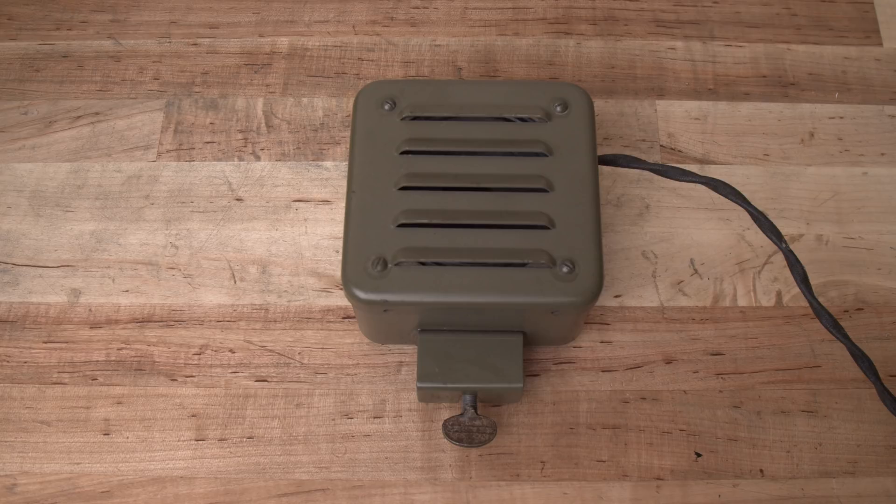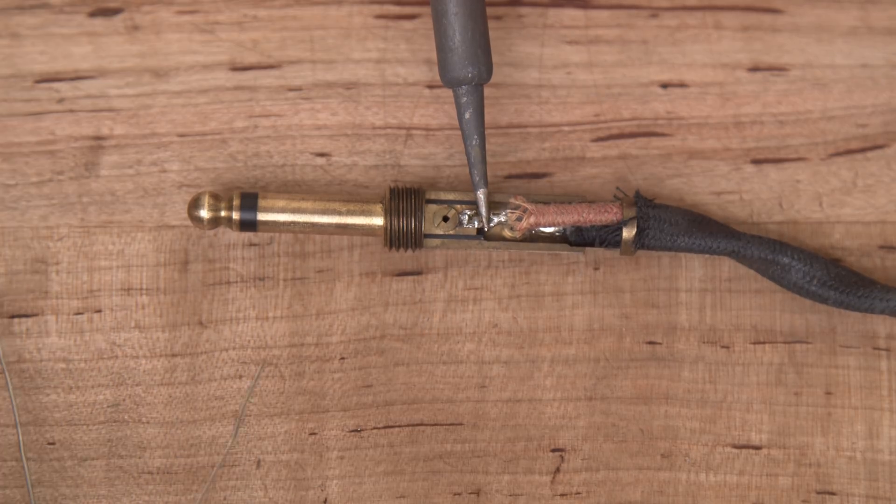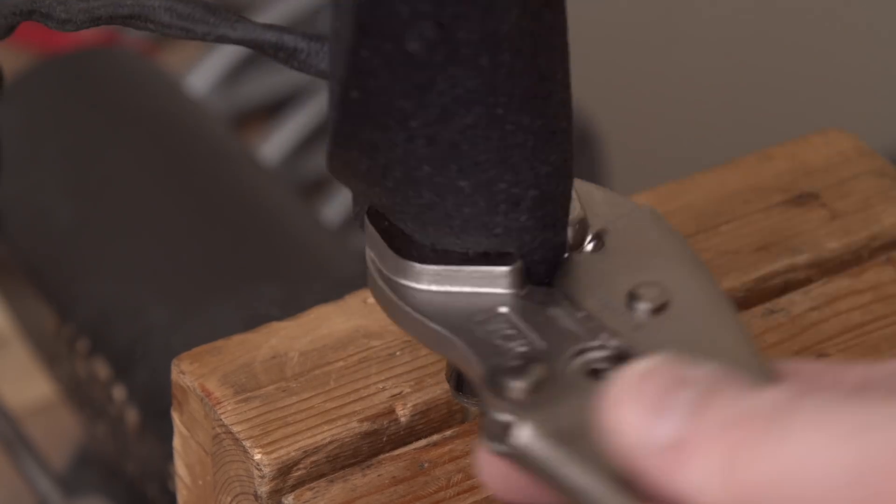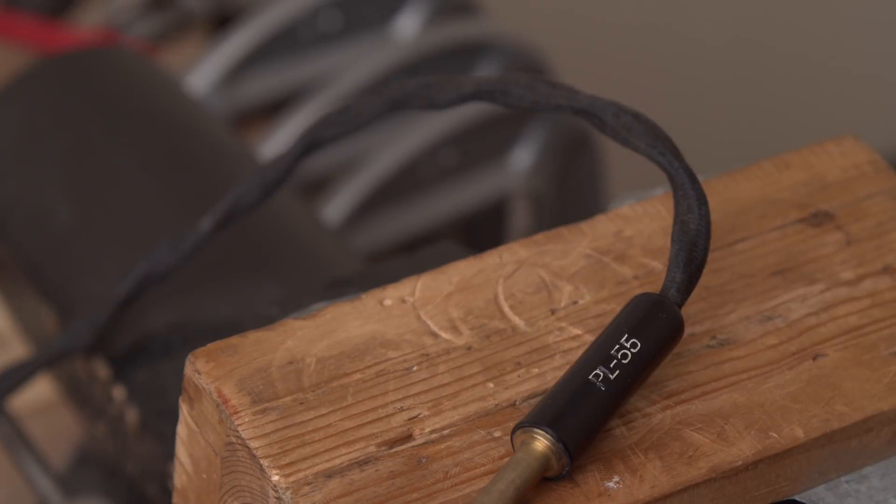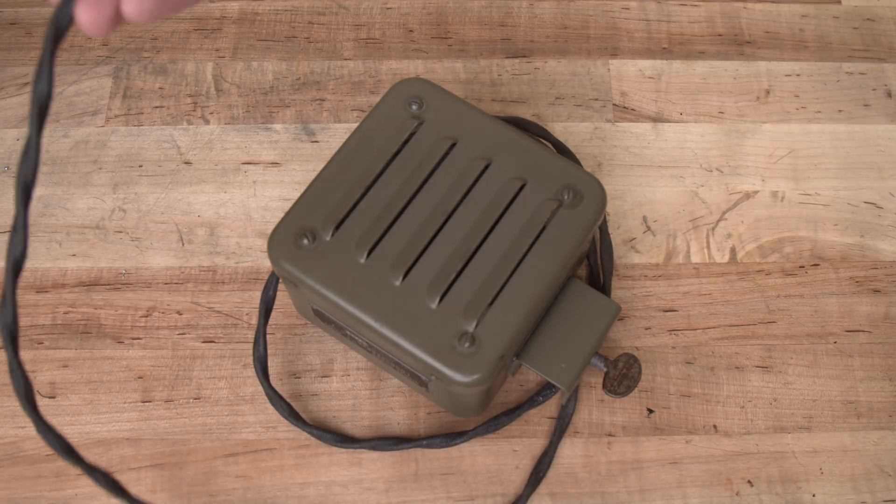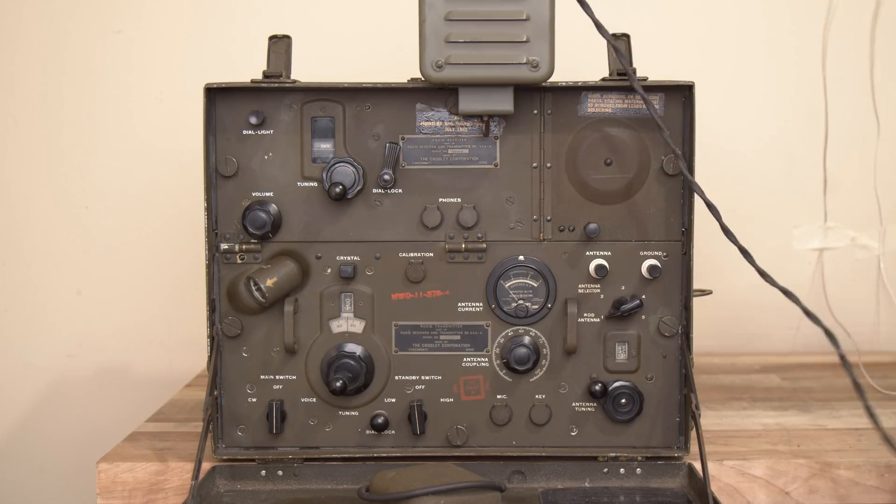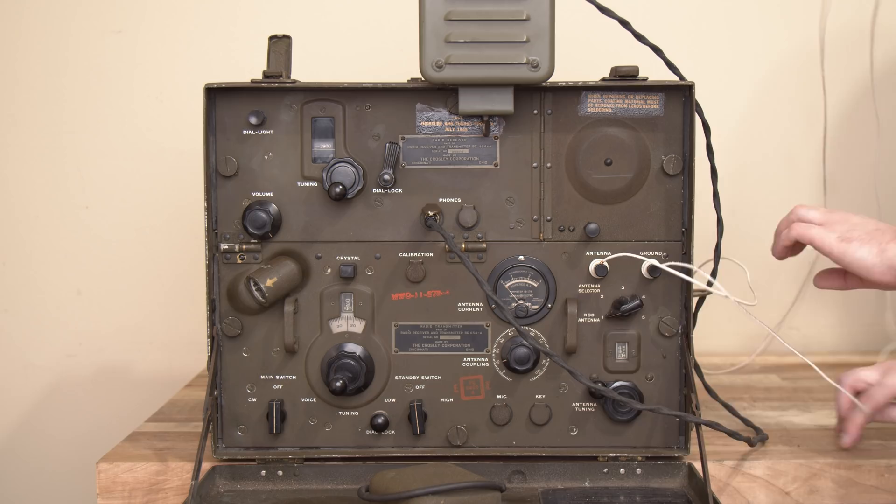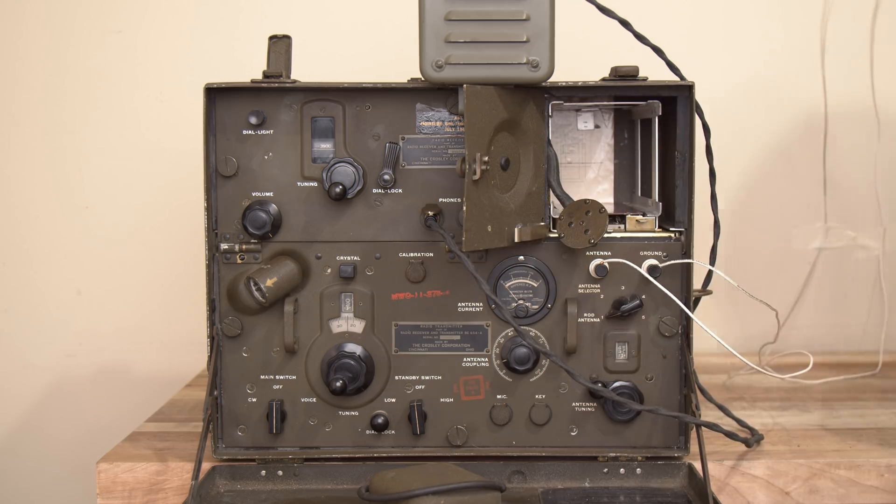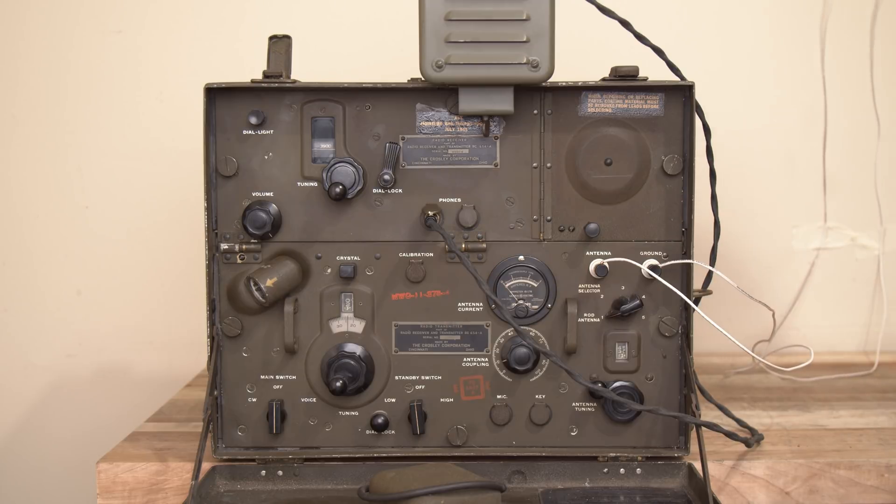After reassembly, I installed a new PL55 connector onto the speaker cable. PL55 is just another designation for the standard one-quarter inch phono plug. Now, I finally had a way to listen to the output of the receiver, so it was time to check my work. I hooked up the loudspeaker and connected the radio to an improvised wire antenna. I installed the BA-43 battery replica, which fit nicely into its cage. Now, without further ado...